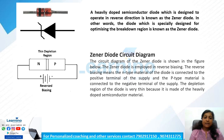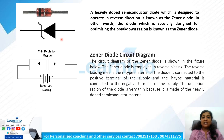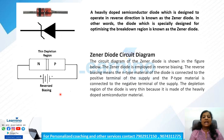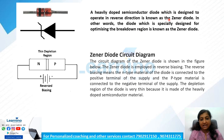First, we have the Zener Diode. This is the Zener Diode — it has a positive and negative terminal. This is very simple.